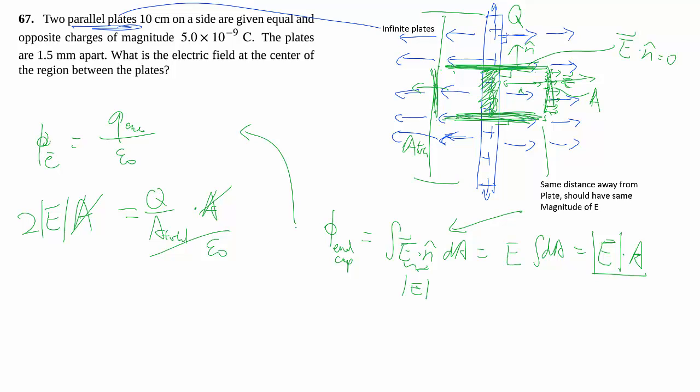The area that I chose doesn't really matter what it is, it all cancels out. This here, if you remember, we can define that as the surface charge density σ. The size of E becomes σ over 2ε₀, and we had this result before.